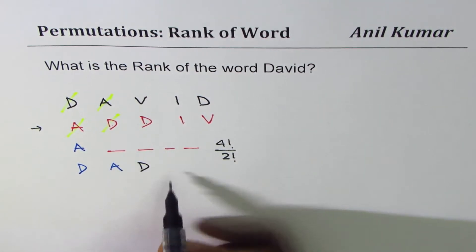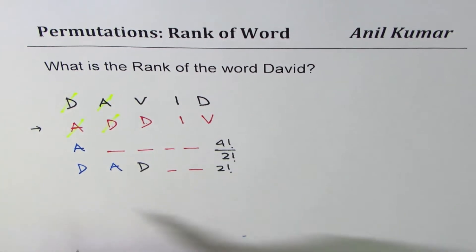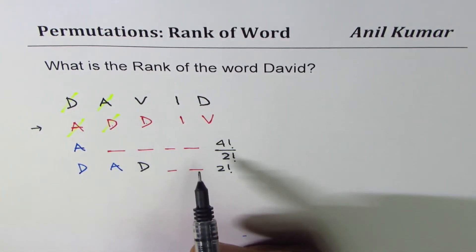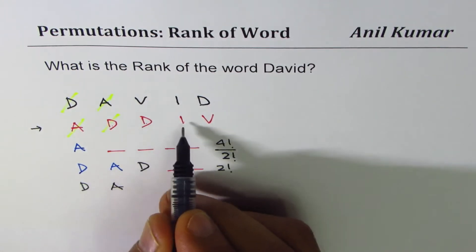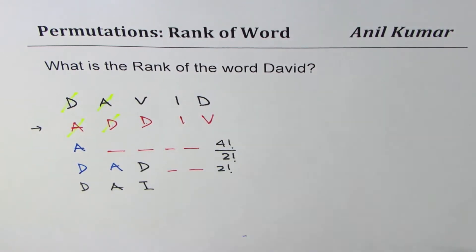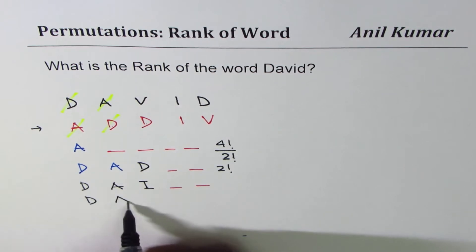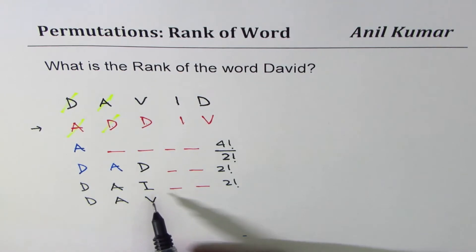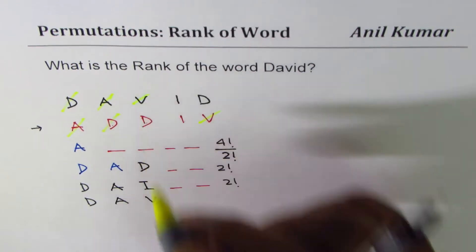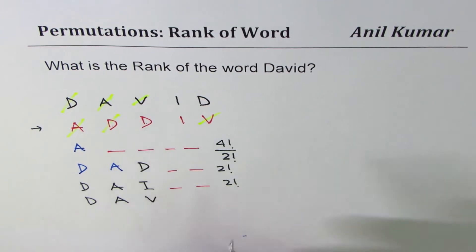All the words starting with D-A-D — we have two positions to fill, so the number of words is 2 factorial — they will come before DAVID. Similarly, D-A-I: two positions to fill, those come before DAVID too. Once those words are exhausted, we get D-A-V, which is also 2 factorial. That matches, so we strike it off — we got V as well.